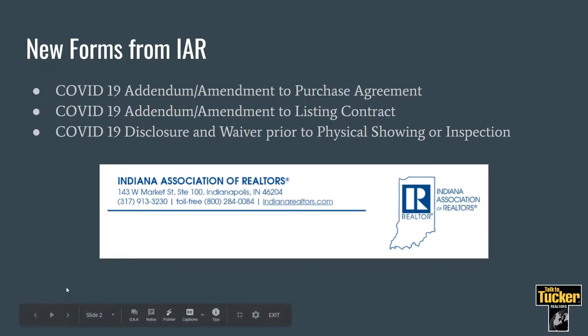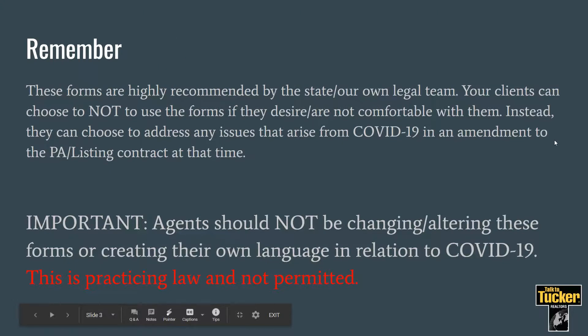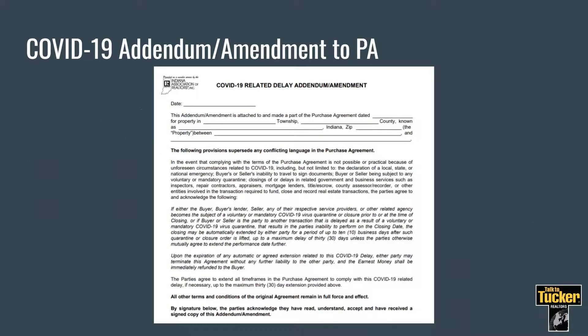The three new forms from IAR are: an addendum amendment to the purchase agreement, an addendum amendment to the listing contract, and a disclosure and waiver prior to physical showing or inspection. We're going to get into the nitty gritty here in just a second. But before we do, remember that these forms are recommended by IAR as well as our own FC Tucker legal counsel. You do not have to use them. There is some really great language in here that we do suggest you work with basically verbatim — we don't want you coming up with your own language, as that's not approved by legal.